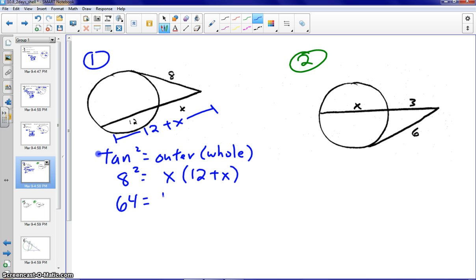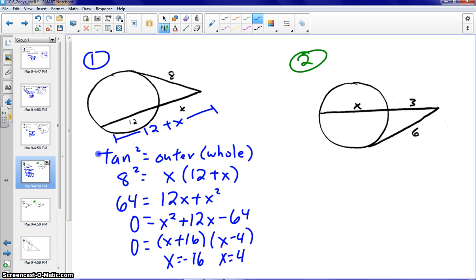If we distribute as well as square the 8, you can see we have a quadratic. So we'll want to get everything on one side, set that equal to 0, and see if we can factor. And this one does factor into X plus 16, the quantity X plus 16 times the quantity X minus 4. So we get X equals negative 16.